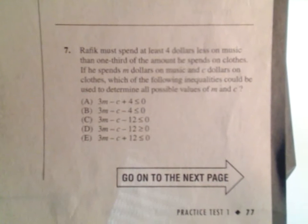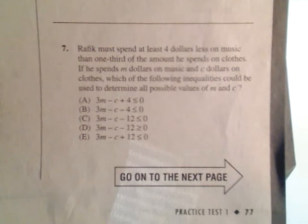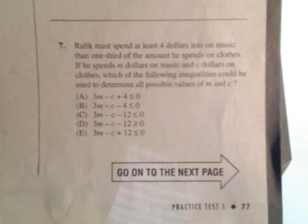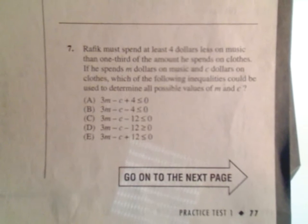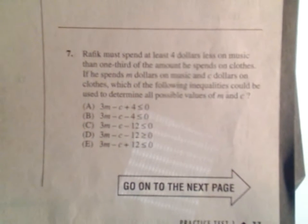This guy must spend at least $4 less on music than one-third of the amount he spends on clothes. If he spends M dollars on music and C dollars on clothes, which of the following inequalities could be used to determine all possible values of M and C?